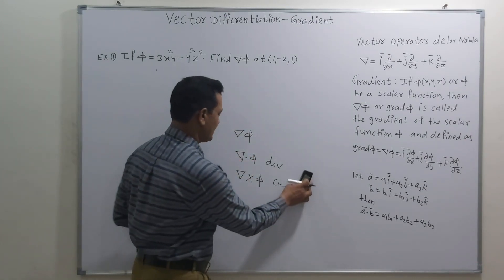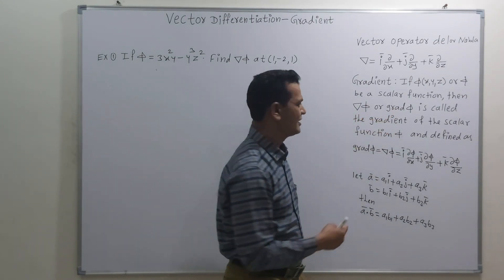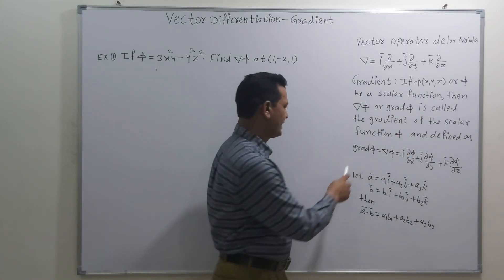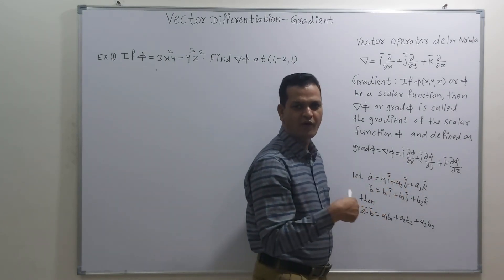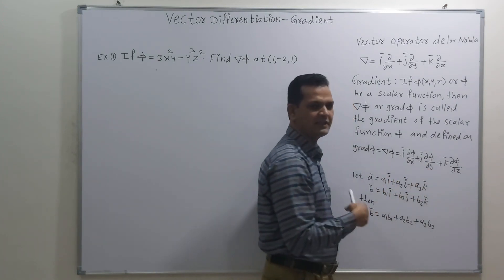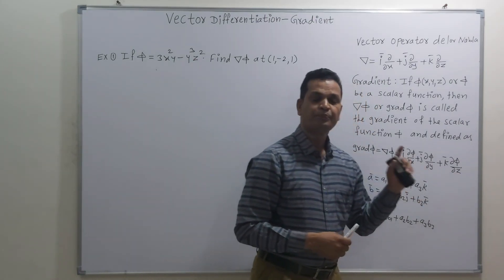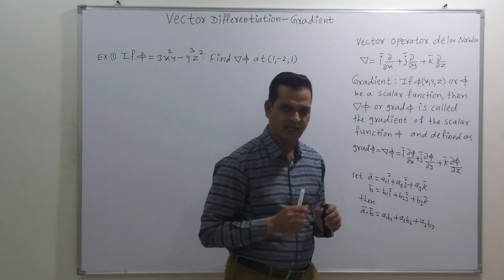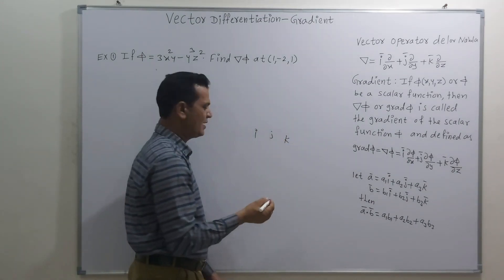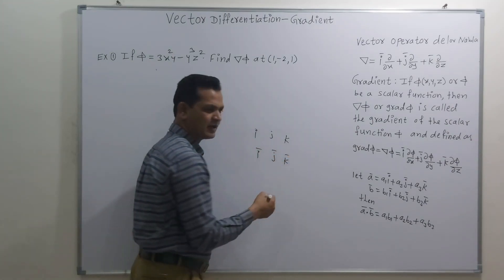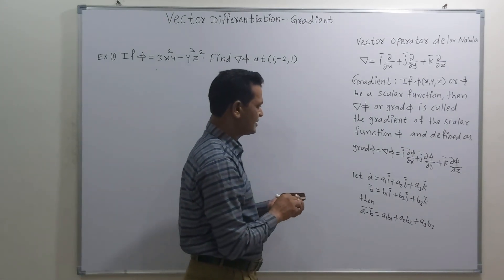The gradient of φ is denoted by del φ or some people write it as grad φ. It is defined as: gradient of φ equals del φ, which equals i times the partial derivative of φ with respect to x, plus j times the partial derivative of φ with respect to y, plus k times the partial derivative of φ with respect to z, where i, j, k denote the unit vectors corresponding to the x, y, and z axes. Some people write these as i-bar, j-bar, k-bar — both notations are acceptable.